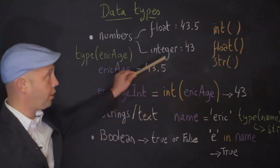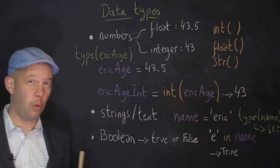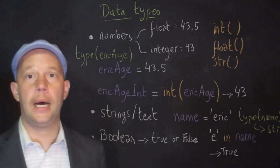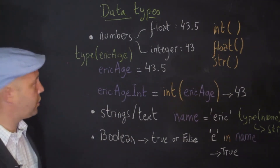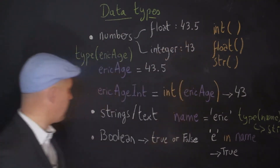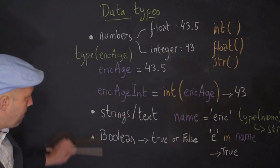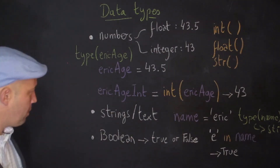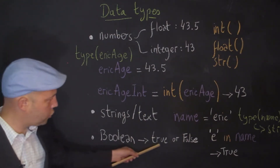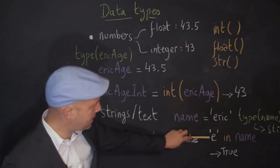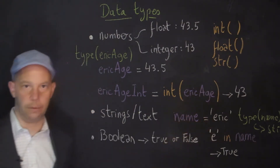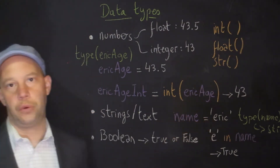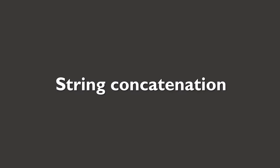It is possible to go from text to numbers using the functions int() or float(). This is useful when you have a text file containing values that refer to numbers and you want to do computation with them. The boolean data type is useful for conditional statements and typically returns True or False. For example, asking whether the letter 'e' is in the variable 'name' (which holds 'Eric') would return True.